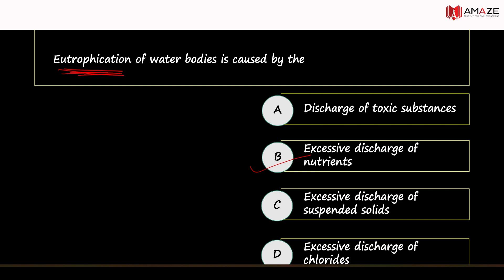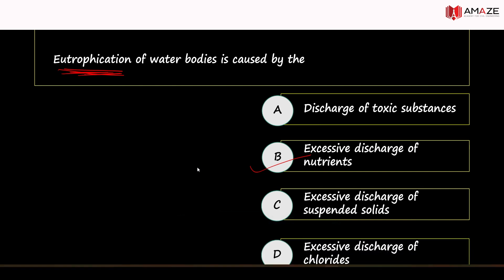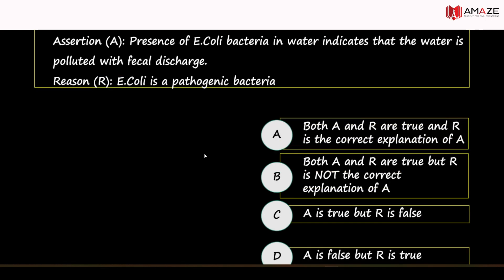There is reduced oxygen in the water, which affects fish and other aquatic animals. Over a huge amount of time, there is progressive degradation in eutrophication. The presence of E. coli bacteria in water indicates that the water is polluted with fecal discharge. E. coli is a pathogenic bacteria.